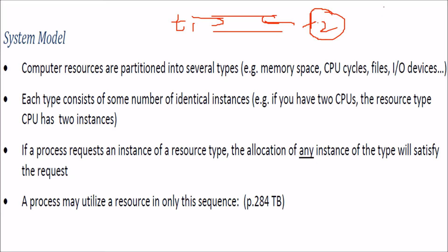There is another example: you are here and there is a corridor and someone else is here. Only one or two persons can pass. Now when you move and this guy also moves to the same side, you both sway together — when you go this side, he also goes this side. There is no possibility of passing. This is also an example of deadlock.